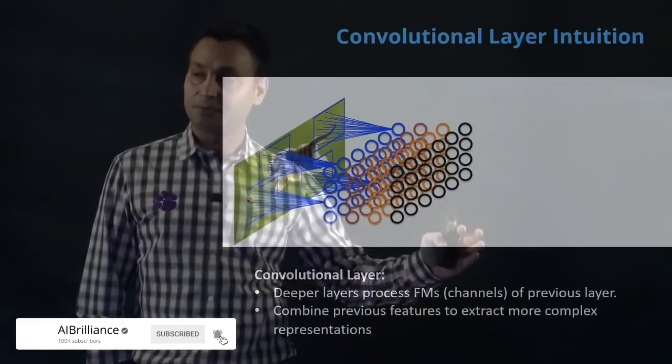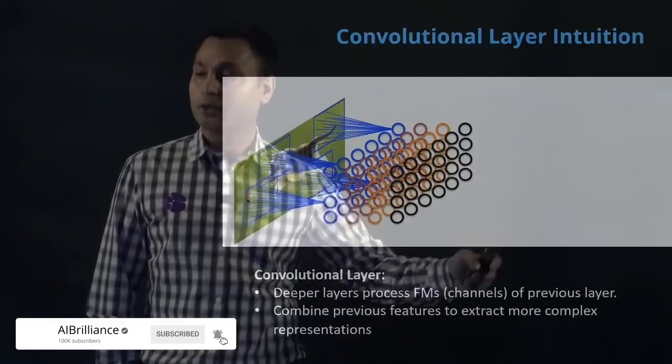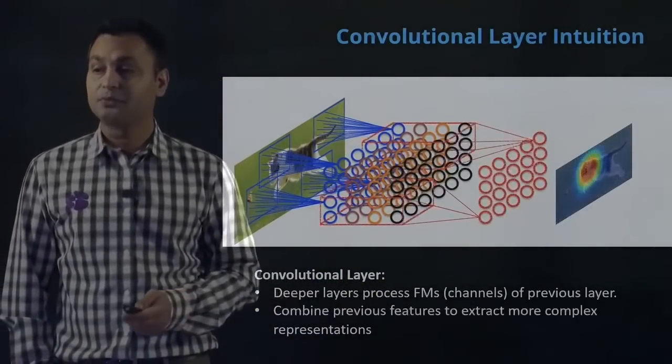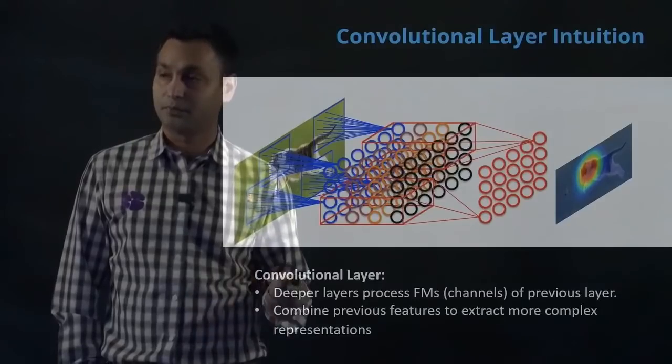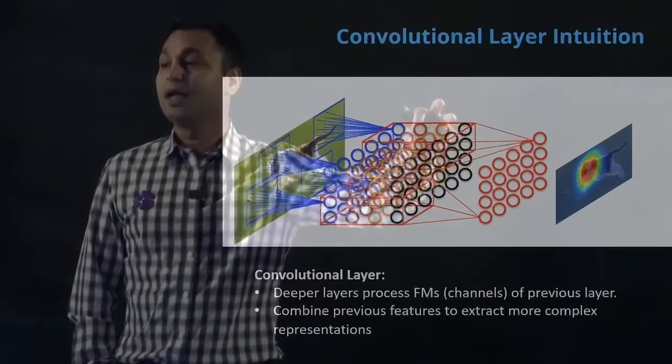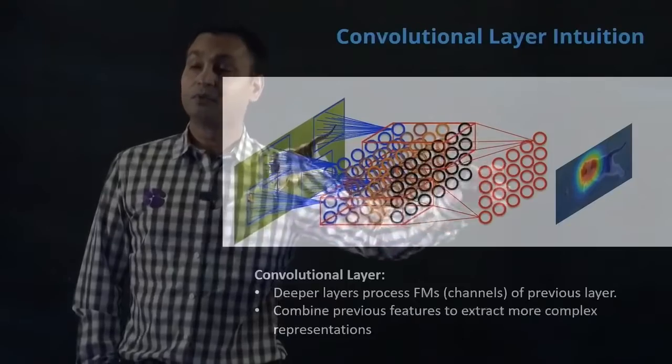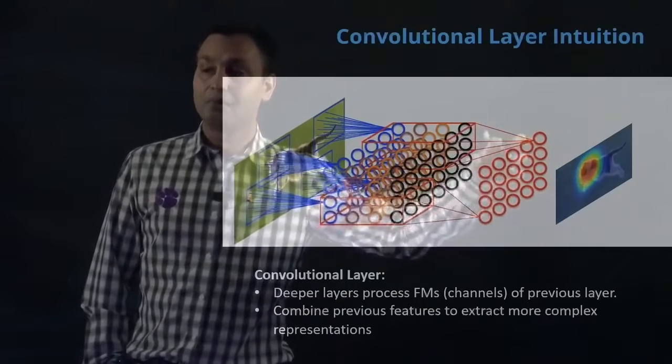We're combining the previous features to create more complex representations. These feature maps or convolution operations with different filters might mean that in a cat image, I'm focusing more on the head portion of the cat.